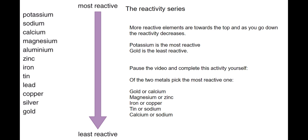As a quick check for yourself, there's a list here with pairs of metals — for example, the first one: gold or calcium. Can you pause the video and, just using the reactivity series on the left, pick the most reactive metal out of each pair? The most reactive metal in each pair is shown in red. The metal nearest to the top of the list is the most reactive. So out of gold or calcium, calcium is nearer the top than gold, so calcium is more reactive. Magnesium and zinc — magnesium is closer to the top, therefore is more reactive, and so on.